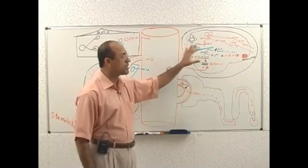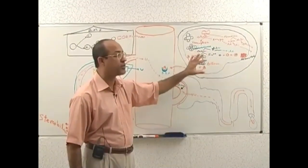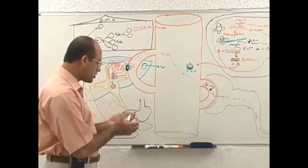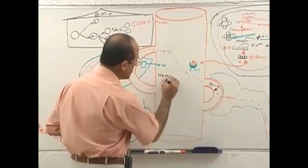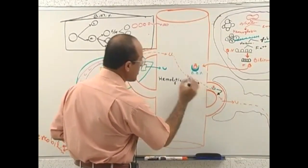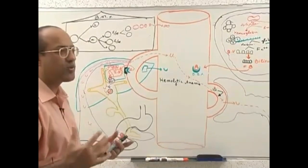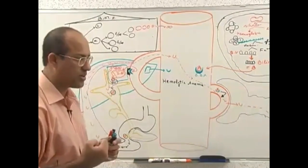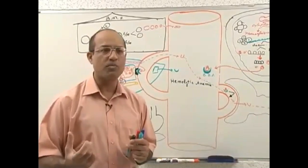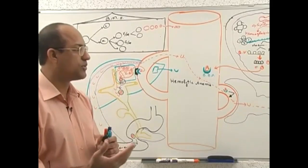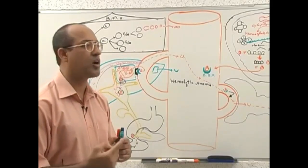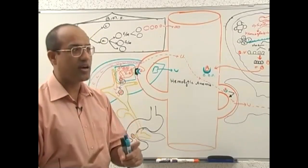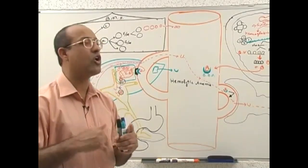We have discussed the normal breakdown of red blood cells. Now we will start discussing hemolytic anemia. Normally, red blood cells survive about 120 days, but if red blood cells start breaking down prematurely — for example, at just 50 or 60 days old — we call that process hemolysis. Hemolysis is the premature breakdown of red blood cells. Breakdown after 120 days is called physiological breakdown.